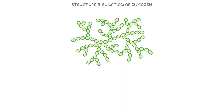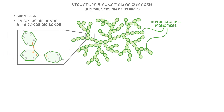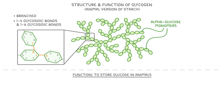Next, let's look at the structure and function of glycogen, which is basically the animal version of starch. Just like starch, glycogen is also made of alpha-glucose monomers, and like amylopectin, it's branched because the monomers are linked by both 1,4-glycosidic bonds and 1,6-glycosidic bonds. Zooming in on glycogen, the monomers are joined together in this way. The primary function of glycogen is to store glucose in animals.